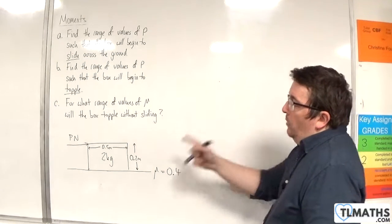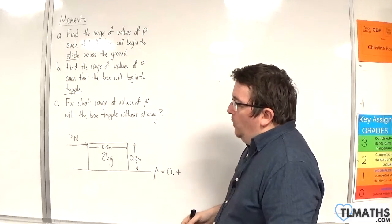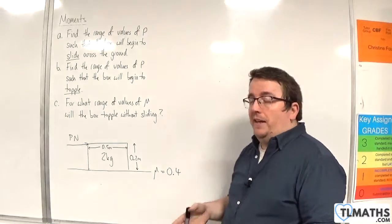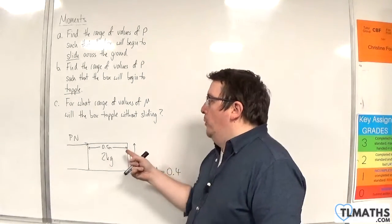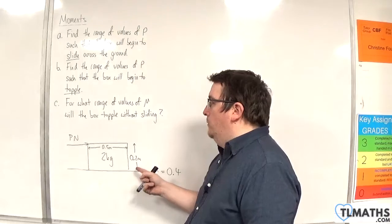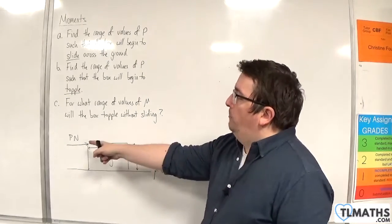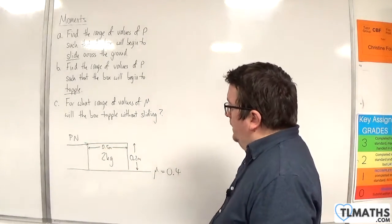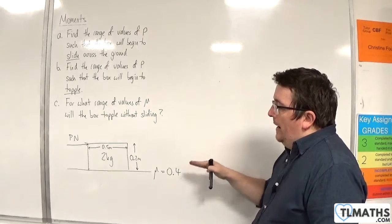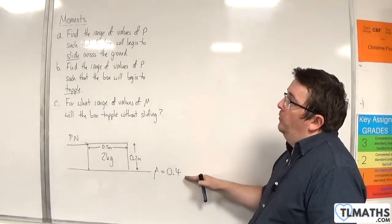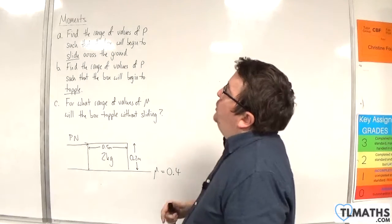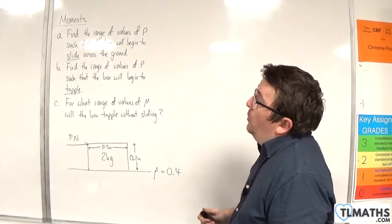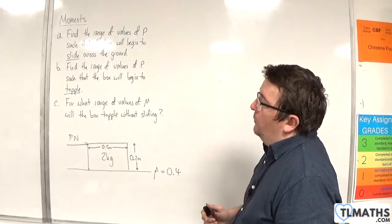In this video, we have a block of mass 2 kilos, which is going to be modeled as a rectangular lamina of width 0.5 meters and height 0.2 meters. A force of p newtons is being applied to the right at that corner, and the surface is rough. It has a coefficient of friction of 0.4. Find the range of values of p such that the box will begin to slide across the ground.